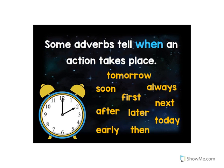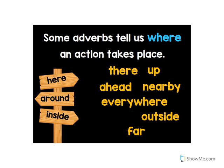Some adverbs tell when an action takes place. For example: tomorrow, soon — 'we will run tomorrow,' 'we will do our homework tomorrow.' Words like tomorrow, soon, always, first, next, after, later, today, early, and then are examples of adverbs that tell us when an action takes place. If you see one of these words next to a verb, it is the adverb.